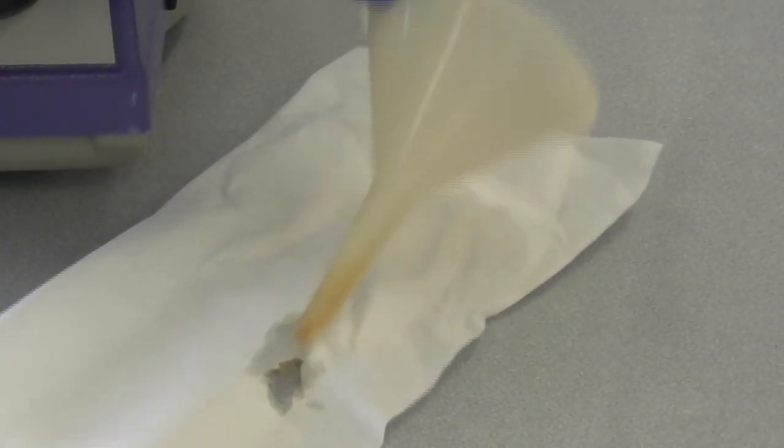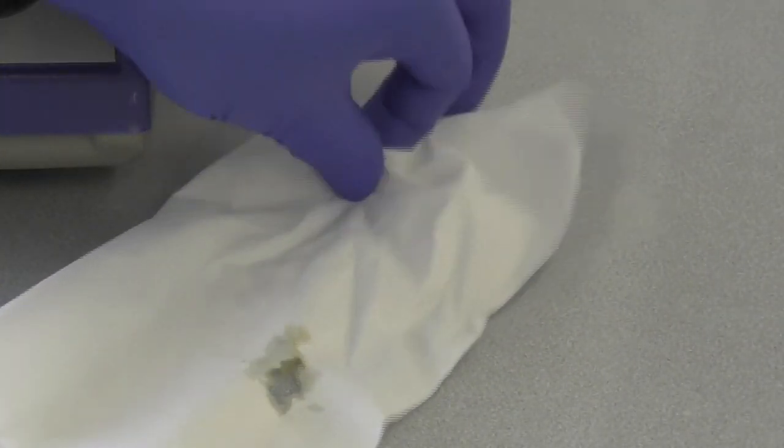Putting the funnel on the tissue on the bench wasn't a good idea, as the concentrated acid has eaten through the tissue and damaged the bench top.